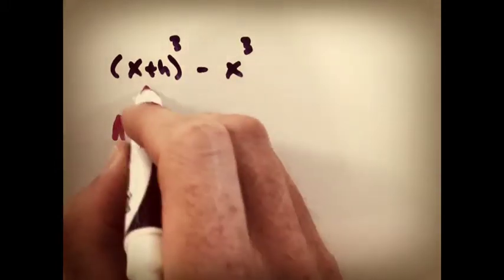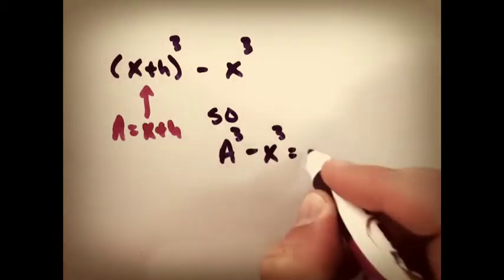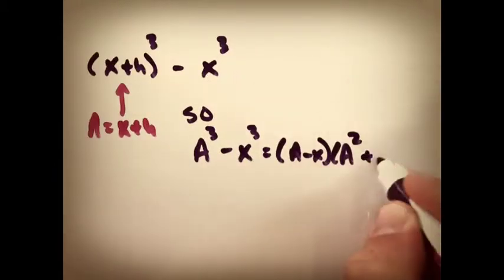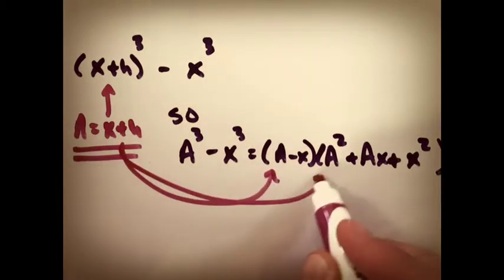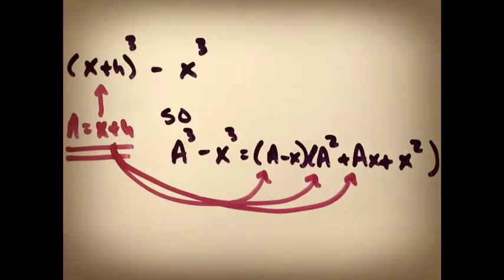With that in mind, this is also a difference of two cubes. Instead, just let A equal X plus H, and then you've got A cubed minus X cubed. Write it out like so, and then just resubstitute in, and you could probably simplify a little bit.